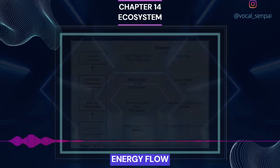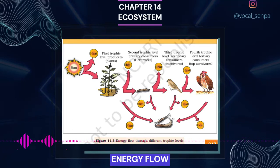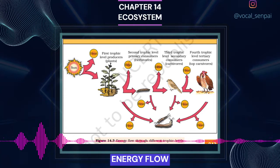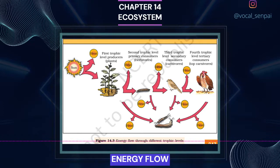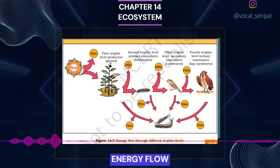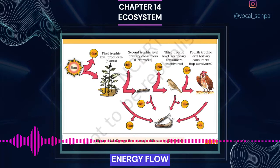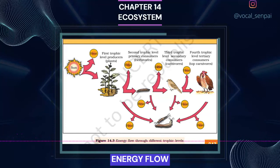Producers belong to the first trophic level, herbivores (primary consumers) to the second, and carnivores (secondary consumers) to the third. The important point to note is that the amount of energy decreases at successive trophic levels. When any organism dies, it is converted to detritus or dead biomass that serves as an energy source for decomposers. Organisms at each trophic level depend on those at the lower trophic level for their energy demands. Each trophic level has a certain mass of living material at a particular time called the standing crop. The standing crop is measured as the mass of living organisms (biomass) or the number in a unit area. The biomass of a species is expressed in terms of fresh or dry weight.